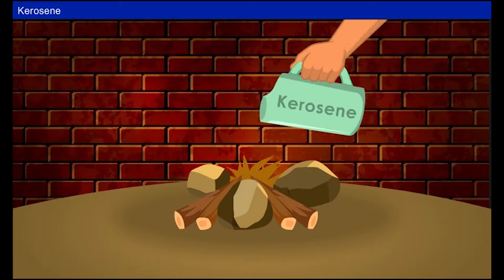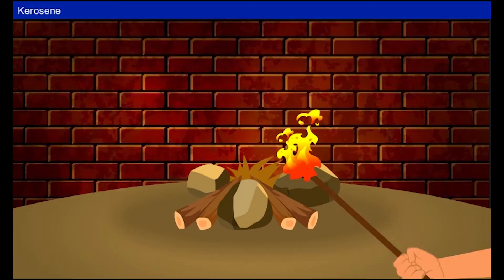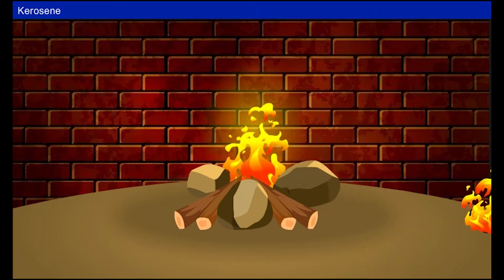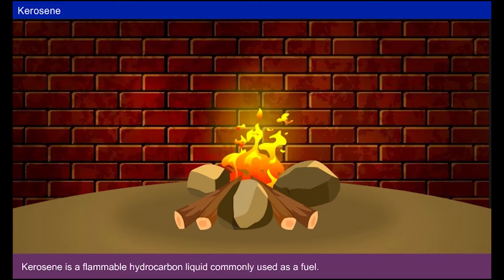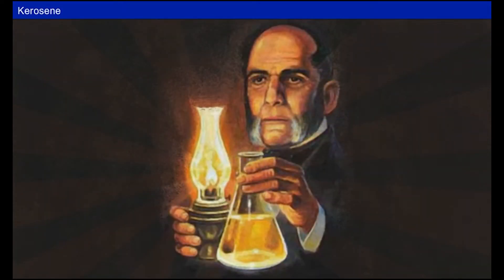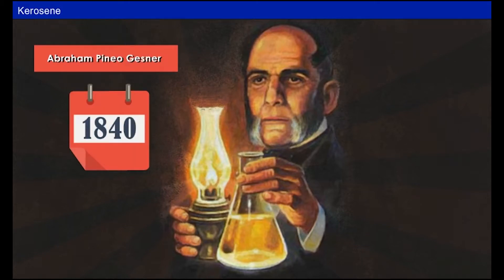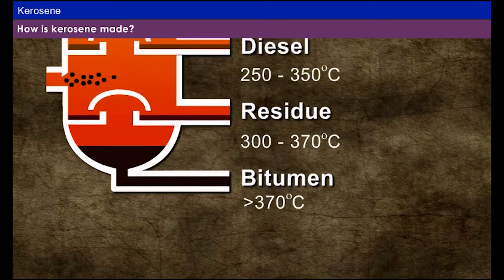Kerosene, also called paraffin or paraffin oil, is a flammable hydrocarbon liquid commonly used as a fuel. It was discovered by a Canadian physician, Abraham Gessner, in the late 1840s. Kerosene was initially manufactured from coal, tar and shale oils.